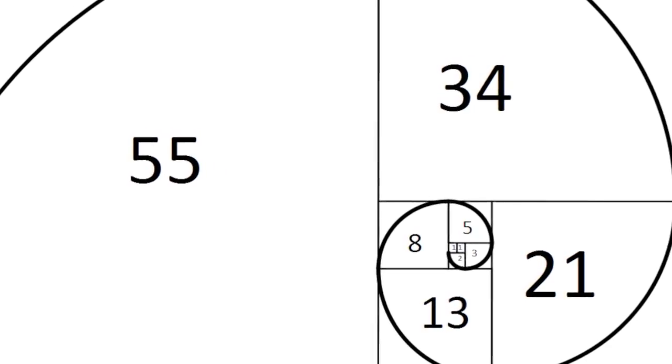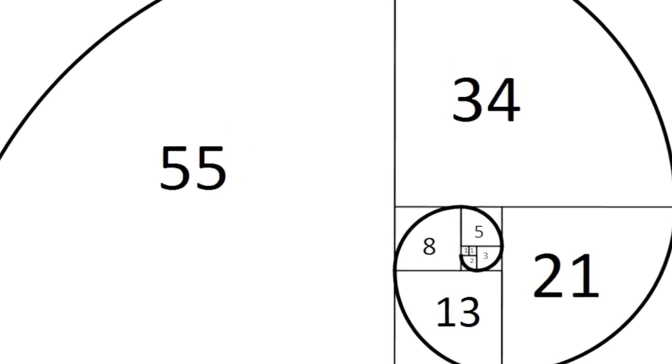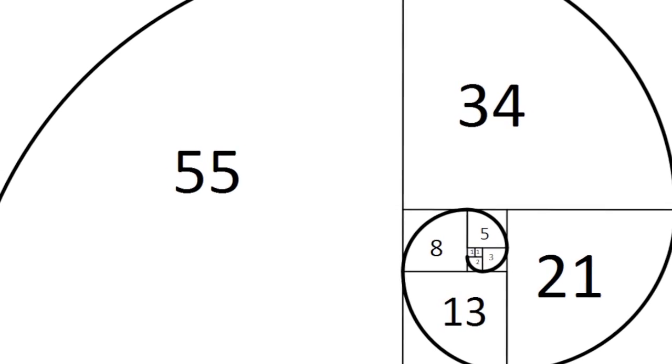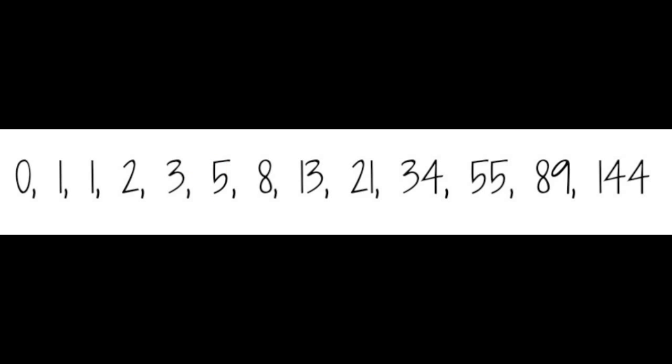You'll find it everywhere — the number of leaves on a plant. Poison ivy is a very good one; it has three leaves. The Fibonacci sequence starts with zero and one, and you add the two numbers to get the next number. So if you keep going, it goes: 1, 1, 2, 3, 5, 8, 13, and so on.